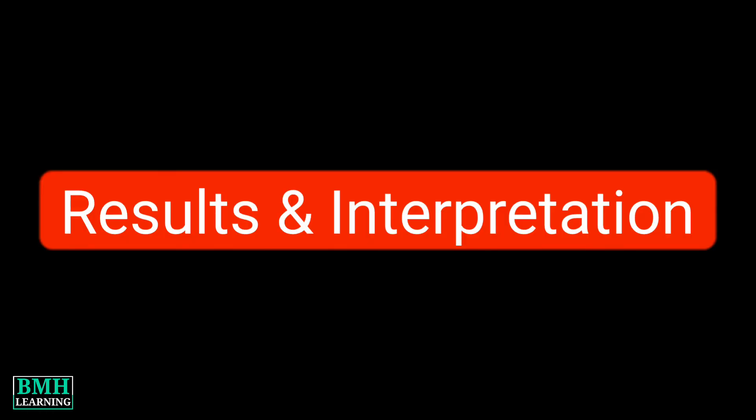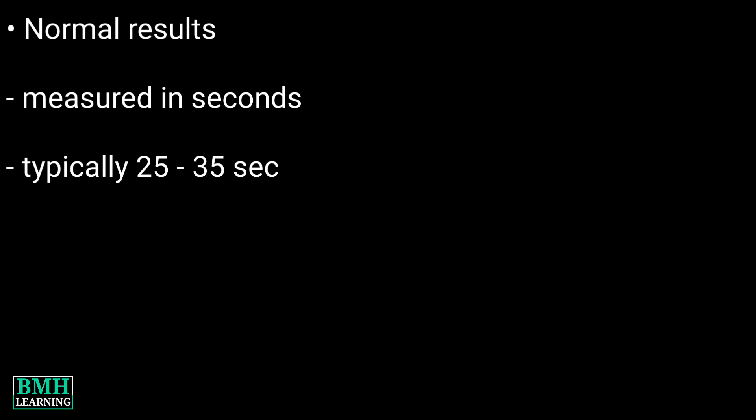What do the results mean? Normal PTT test results are measured in seconds. Normal results are typically 25 to 35 seconds, meaning that it took your blood sample 25 to 35 seconds to clot after adding the chemicals.